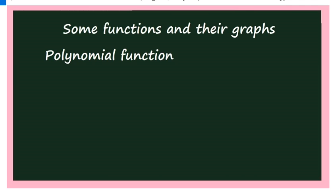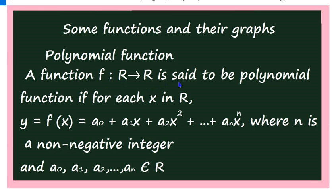Now let us come to the polynomial function. A function f from R to R is said to be a polynomial function if, for each x in R, y = f(x) = a₀ + a₁x + a₂x² + … + aₙxⁿ, where n is any non-negative integer and a₀, a₁, a₂, …, aₙ are real numbers.